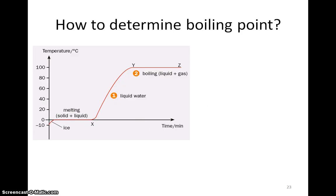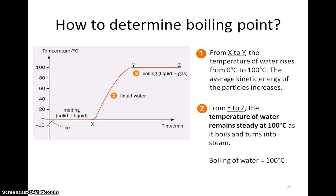Let's say now we want to determine the boiling point of water. We just have to continue to heat the water until it boils and plot the heating curve. Recall that during boiling, the temperature of the substance does not change. Hence, from the graph, the boiling point of the substance is at 100 degrees Celsius.